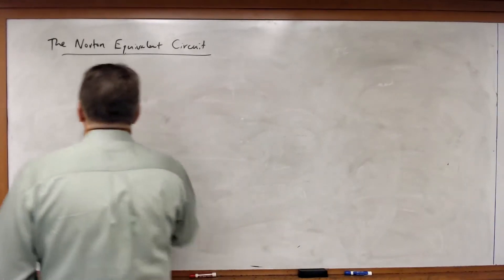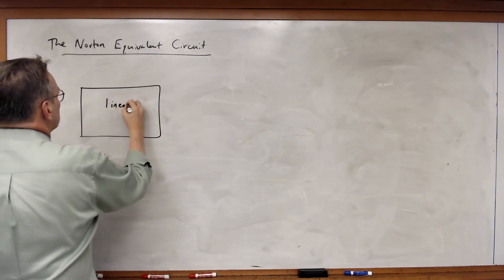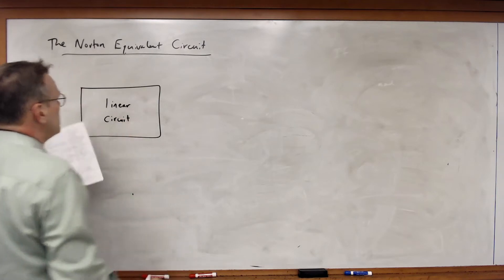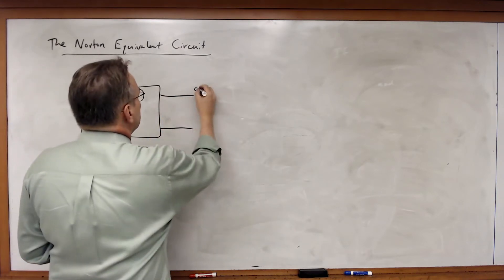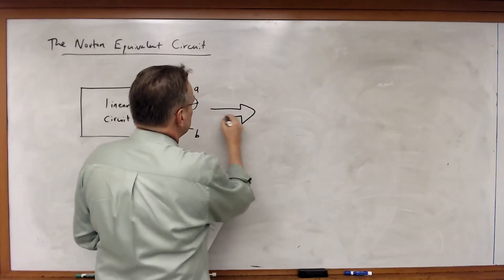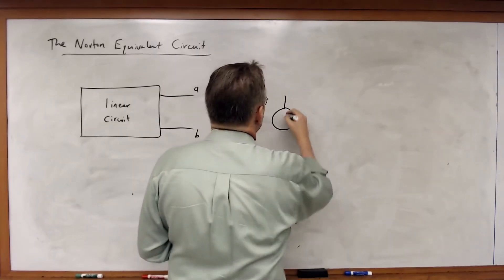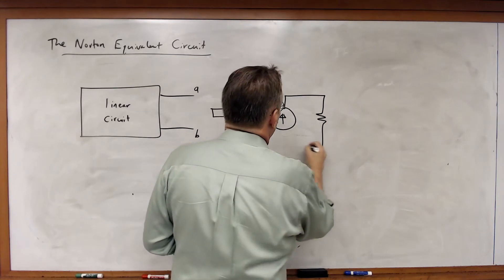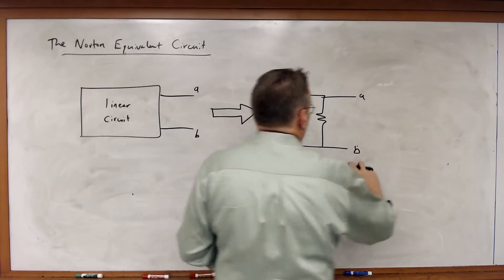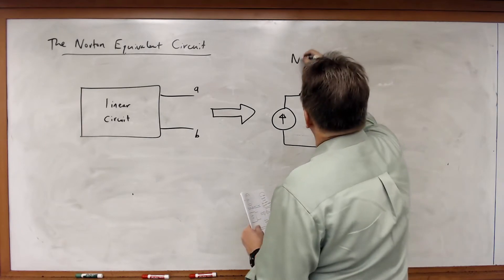This is what Norton discovered. Norton came up with a theorem that showed the following was true: given a linear circuit with nodes A and B, there exists a transformation such that this linear circuit can be transformed into a current source in parallel with a resistance. And this is the Norton equivalent circuit.